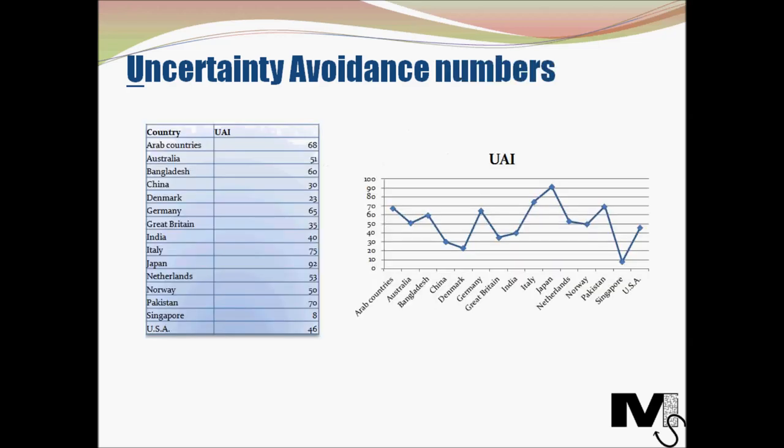Looking at the numbers, countries at the top of the spectrum — highest uncertainty avoidance — include Japan, Italy, and Pakistan. At the bottom of the spectrum, with the lowest uncertainty avoidance, you have Singapore, Denmark, and Great Britain.